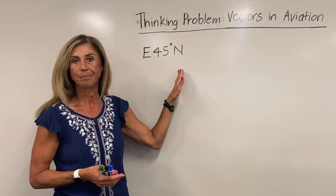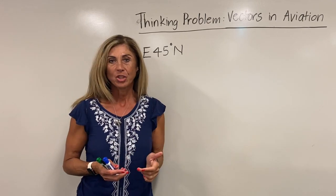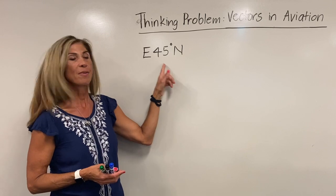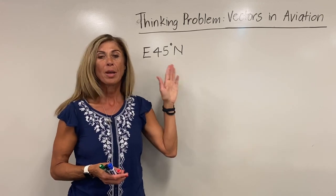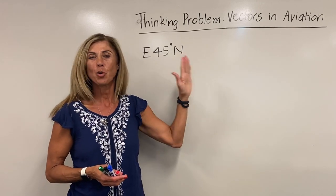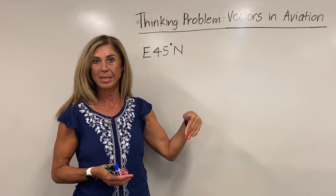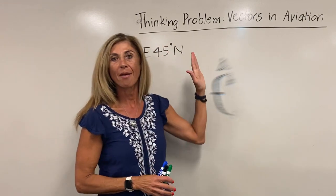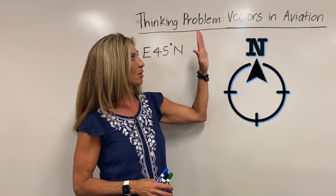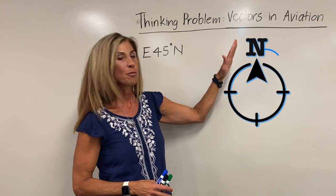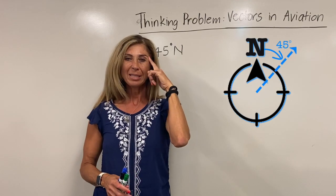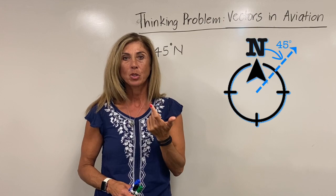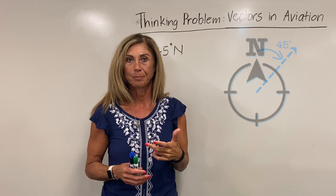E 45 degrees N. In aviation, we read this as east 45 degrees of north. So everything is measured off of due north or due south. We are going to have a north compass and then go east of it 45 degrees. So pay attention to how that looks as we come up to our actual thinking problem.